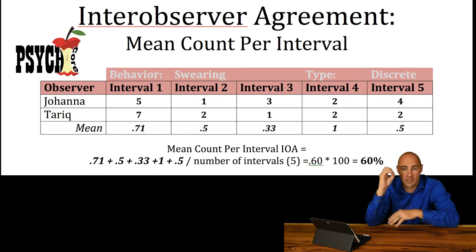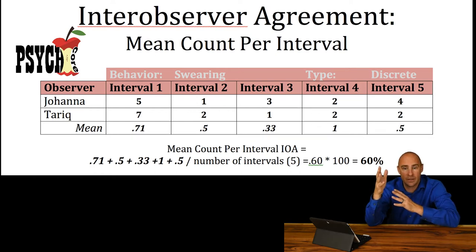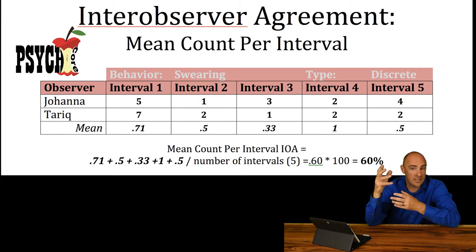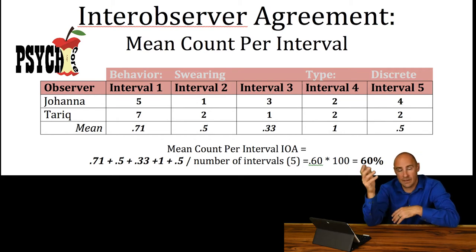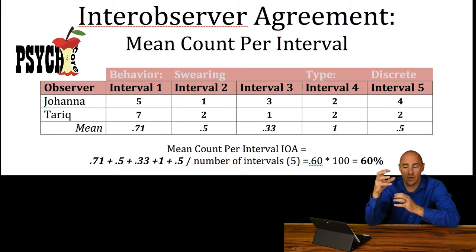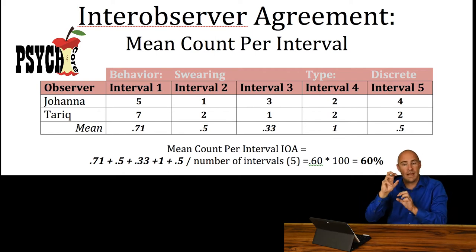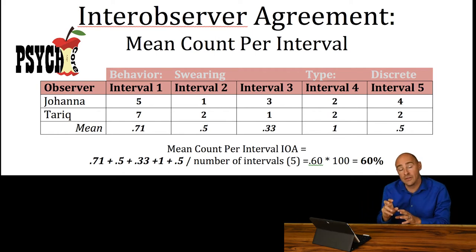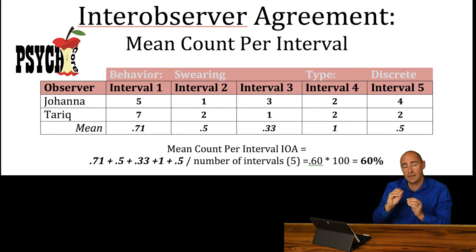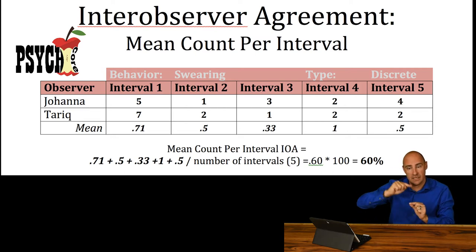We're going to do that for each and every interval that we have. You could have zero percent — they didn't agree at all — or a hundred percent, they agreed perfectly. So the ratio between those two numbers: two divided by three is 66%, one divided by three is 33%. We're going to get a measure of how well they agreed in each interval, then average those ratios — those percentages — at the end.